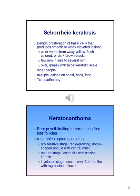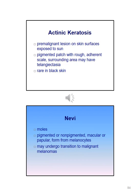Keratoacanthoma is a benign self-limiting tumor arising from hair follicles that resembles squamous cell cancer. It can be in different stages: proliferative, mature, and involution. Actinic keratosis is a pre-malignant lesion on skin surfaces exposed to the sun. The area is a pigmented patch with rough adherent scaling; the surrounding area may have telangiectasia. This is rare in black skin.